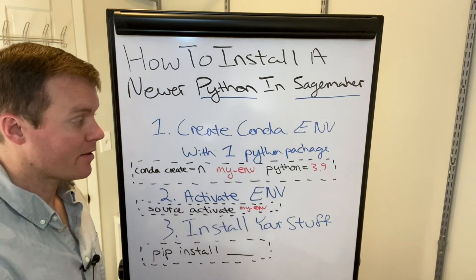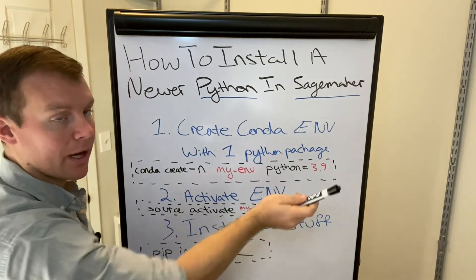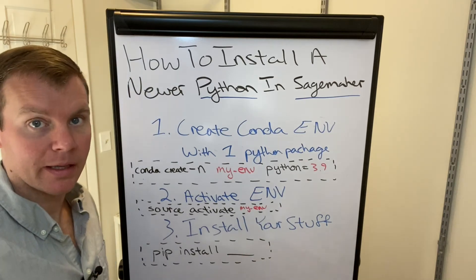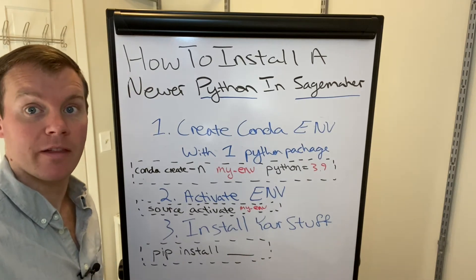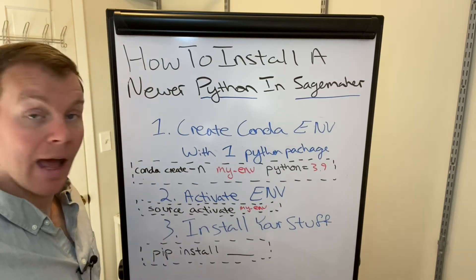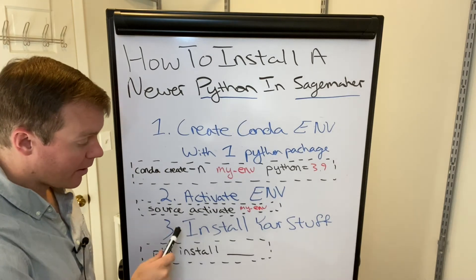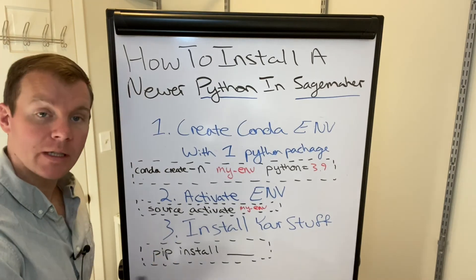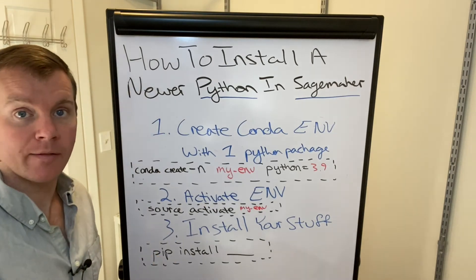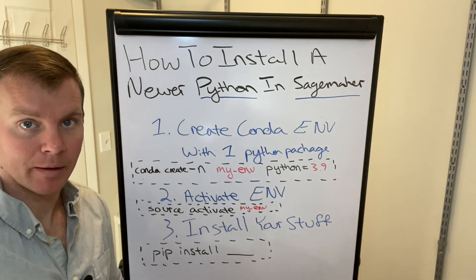We can specify what version of Python we want — like 3.8, 3.9, 3.7 — go ahead and pick it. Those are Pythons available as a Conda package. After that, we just need to activate our environment, and then we can pip install whatever packages we want into that environment.